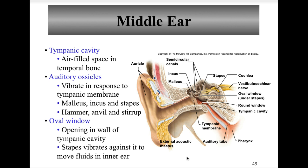The tympanic cavity is an air-filled space behind the eardrum that separates the outer from the inner ear. The auditory ossicles are three tiny bones in the middle ear: the malleus, incus, and stapes — also known as the hammer, anvil, and stirrup. The malleus connects to the tympanic membrane; the incus connects the malleus to the stapes; and the stapes connects the incus to the oval window, which is the entrance to the inner ear.